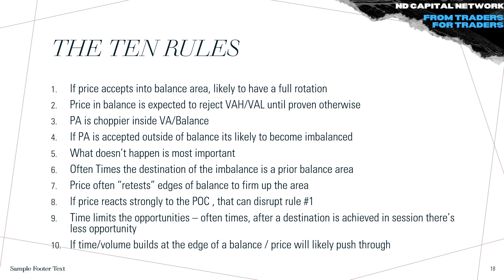Here are key rules you need to know. If price accepts into a balance area it's likely to have a full rotation. Price in imbalance is expected to reject the value area high or value area low until proven otherwise. Price action is choppier inside balance. If price is accepted outside of balance, it's likely to become imbalanced. What doesn't happen is most important. Often the destination of the imbalance is a prior balance area. Price often retests the edges of balances to firm up the area. If price reacts strongly to the POC, that can disrupt rule one — causing a failed rotation rather than a full rotation to the value area high or low. Time limits opportunity — after a destination is achieved in a session there is less opportunity. If time or volume builds at the edges of balance, a breakout becomes more likely.